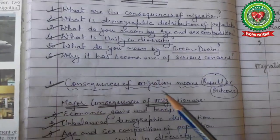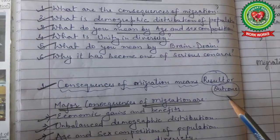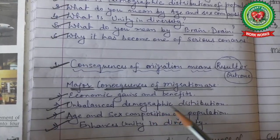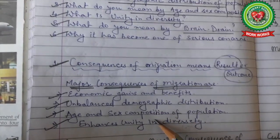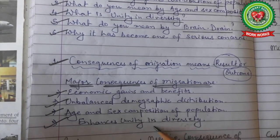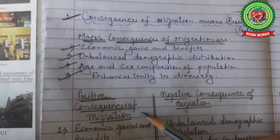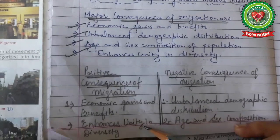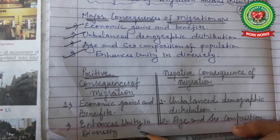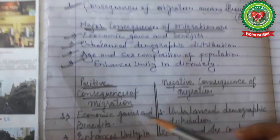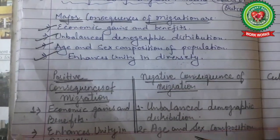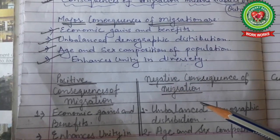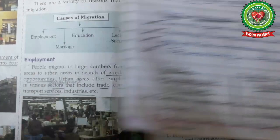We are going to focus on these points. Consequences of migration means the result or outcome. The major consequences of migrations are: economic gains and benefits, unbalanced demographic distribution, age and sex composition of population, and enhancing unity in diversity. Economic gains and benefits, and enhancing unity in diversity are positive consequences. Unbalanced demographic distribution and age and sex composition are part of the negative consequences of migration.